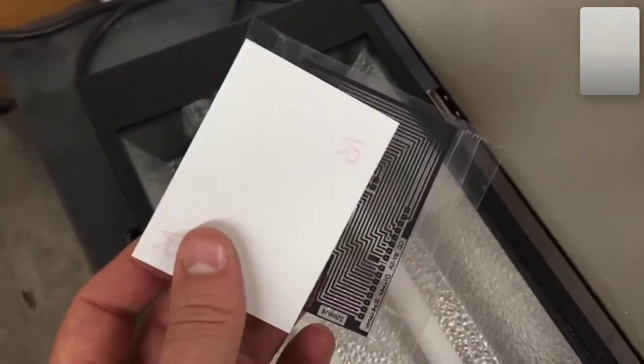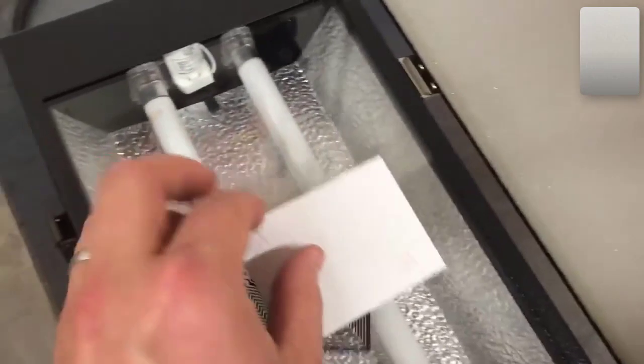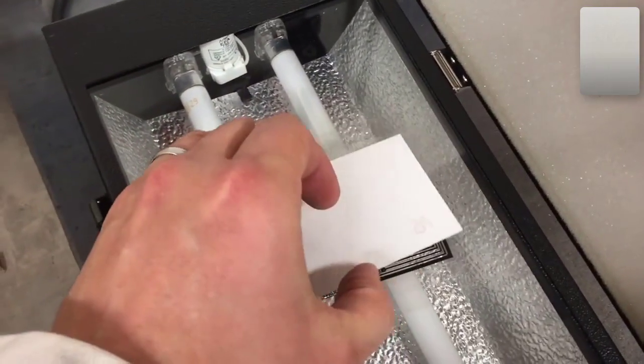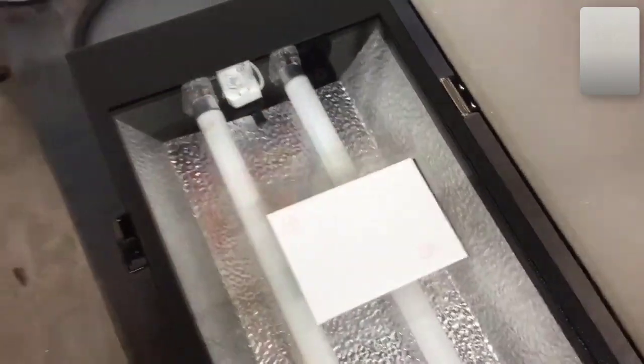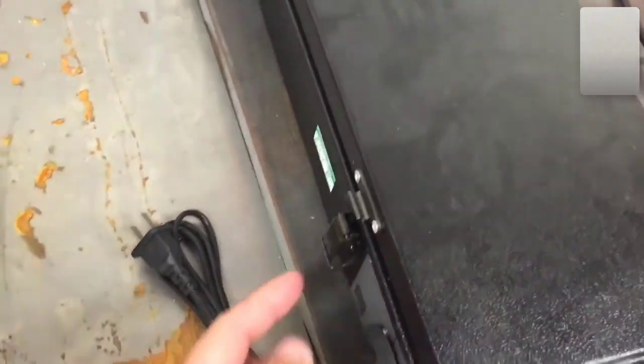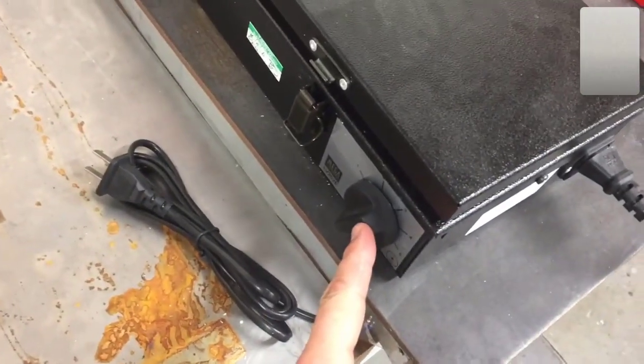We've got our board and our acetate and we're going to place them face down on the UV light box, close the lid, tighten it up and set the timer to two minutes.